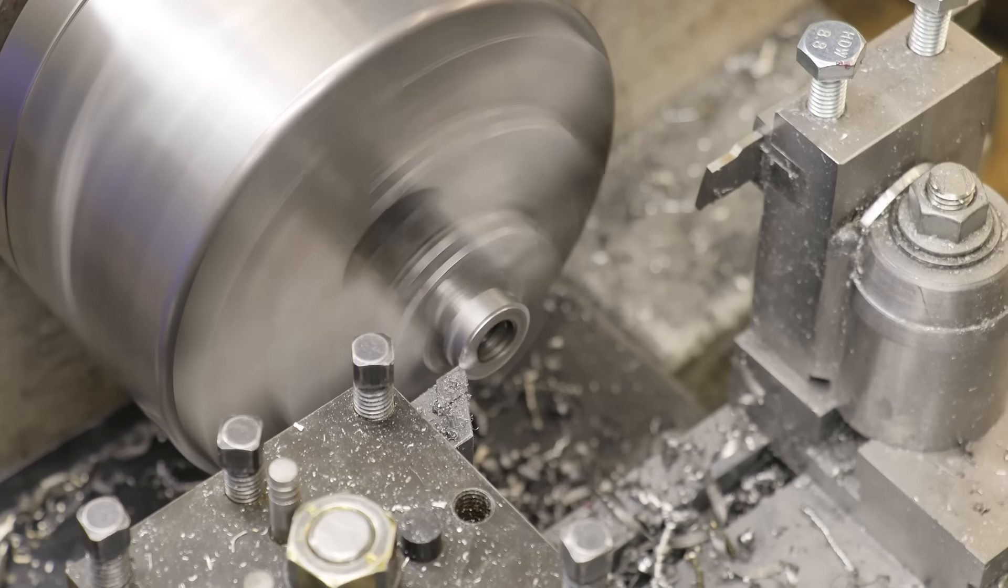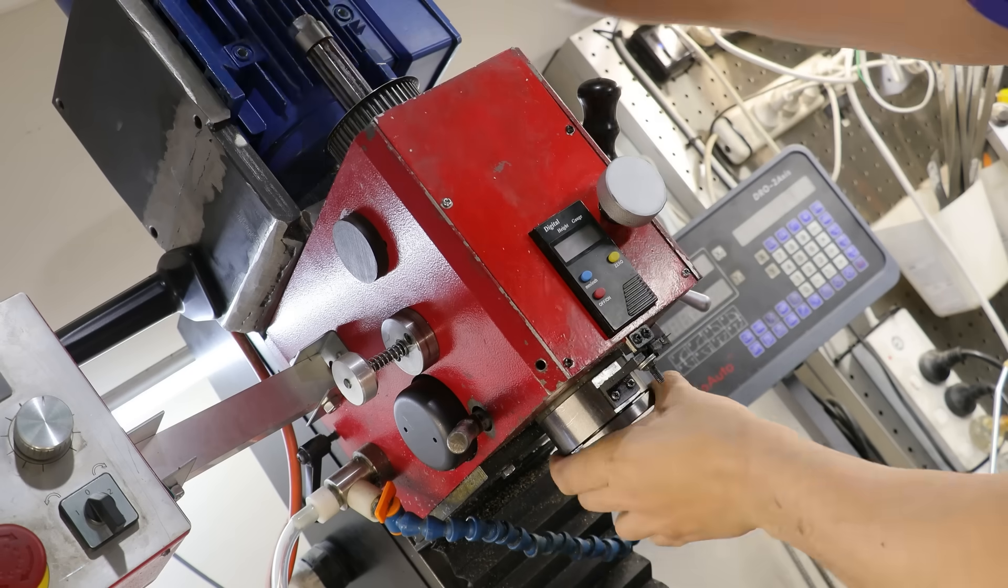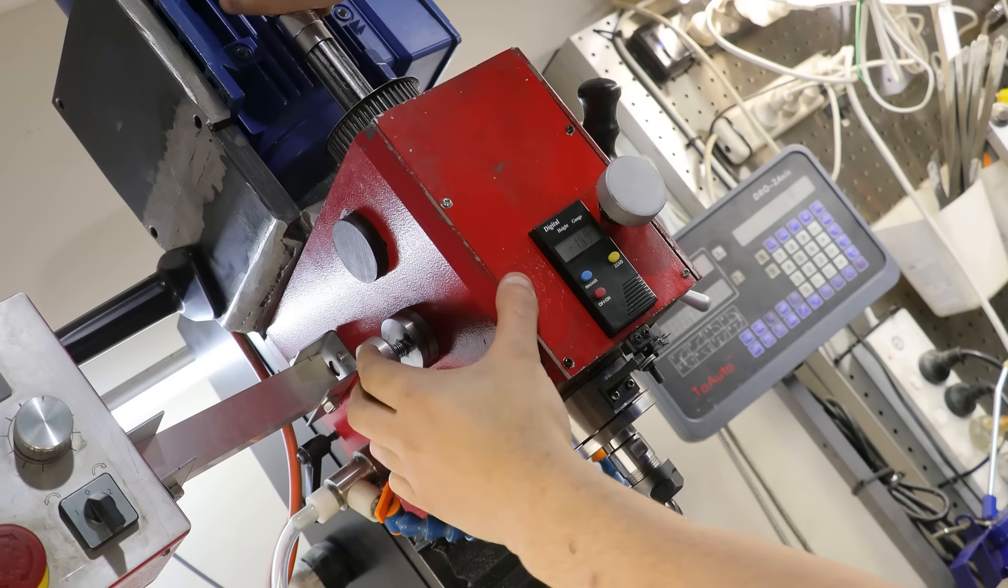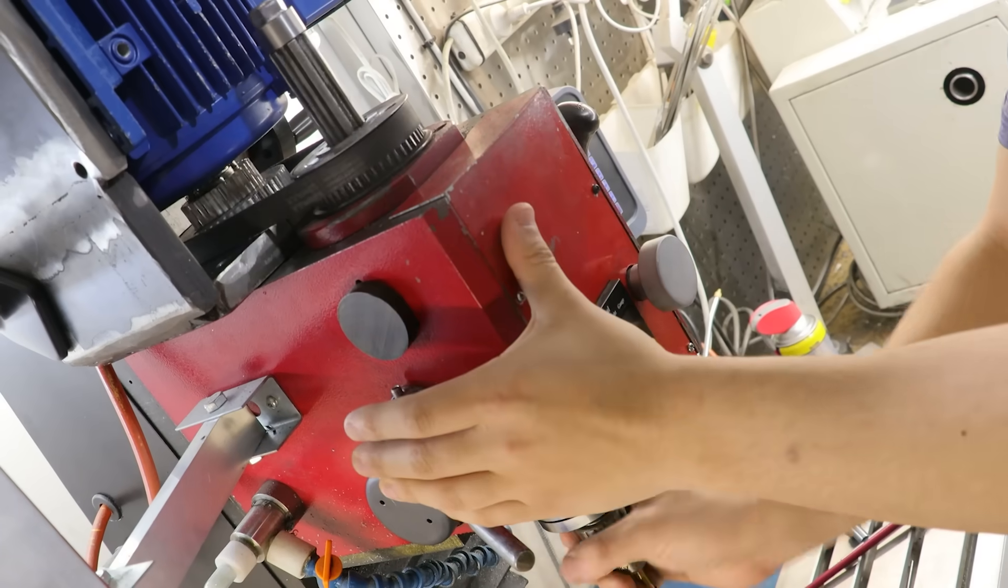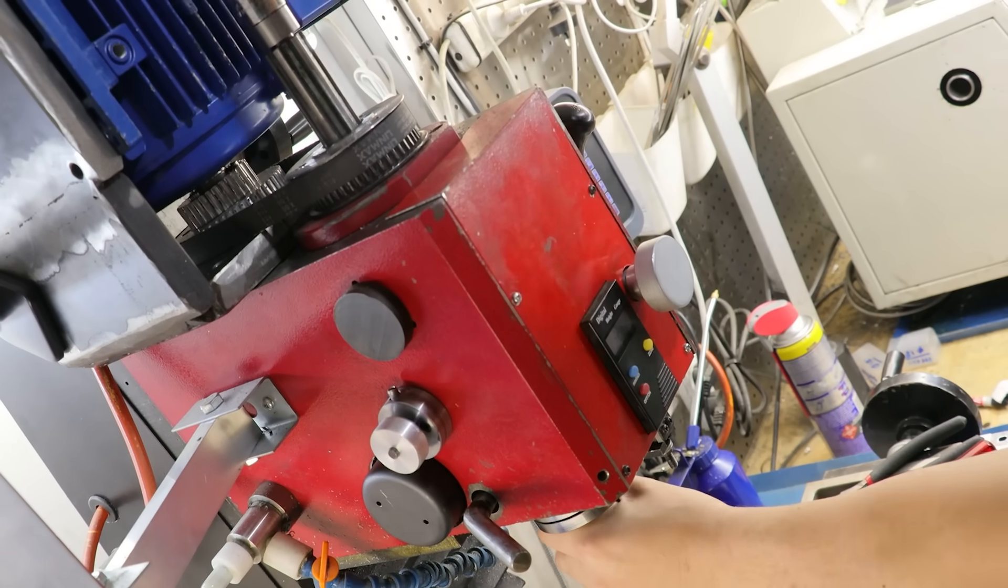So after a quick trip to the lathe, where I removed a bit of material from the bottom of the flange nut, the captive drawbar is working pretty much flawlessly. All in all, I'm really happy with this upgrade and I'm just amazed at how easy and quick it was to do.